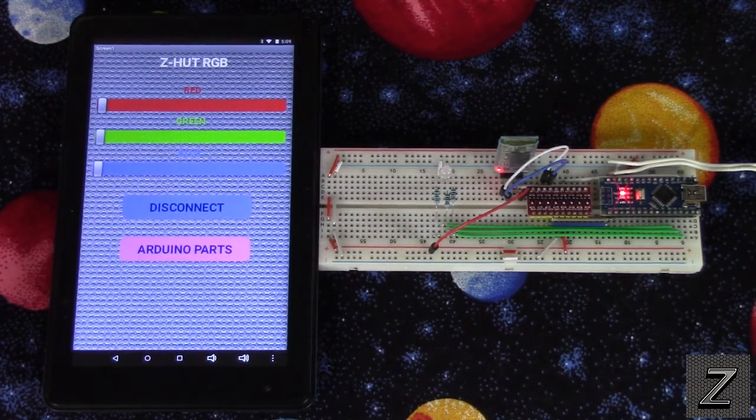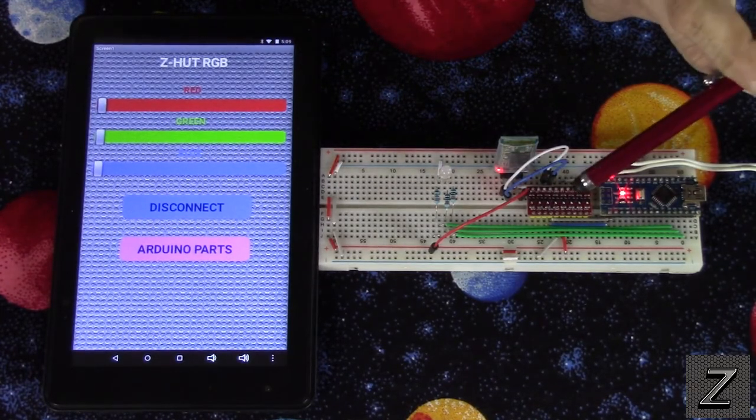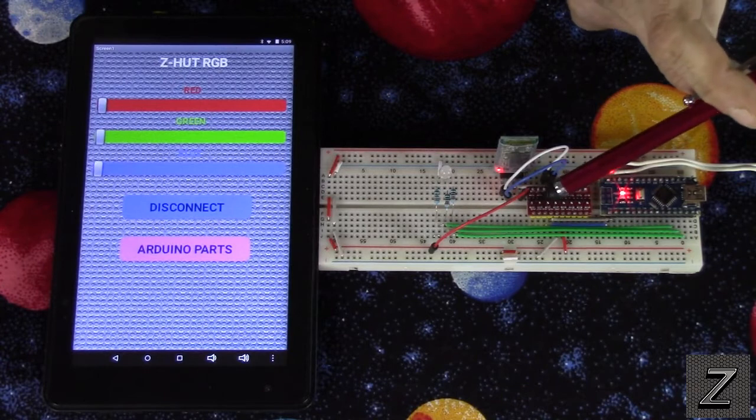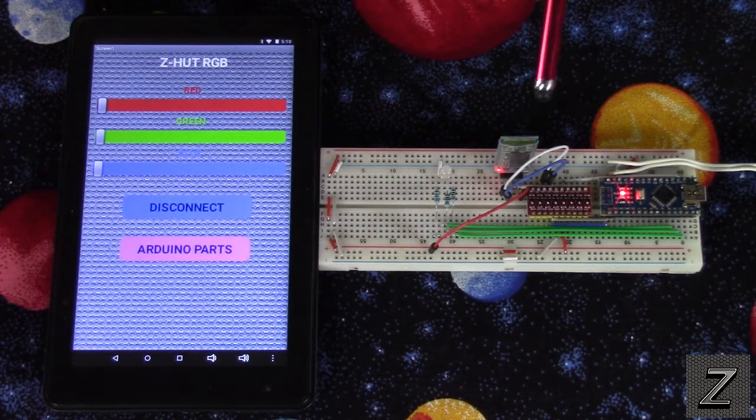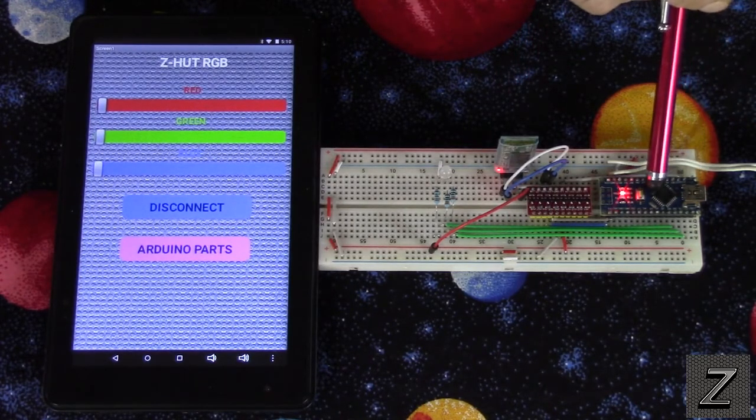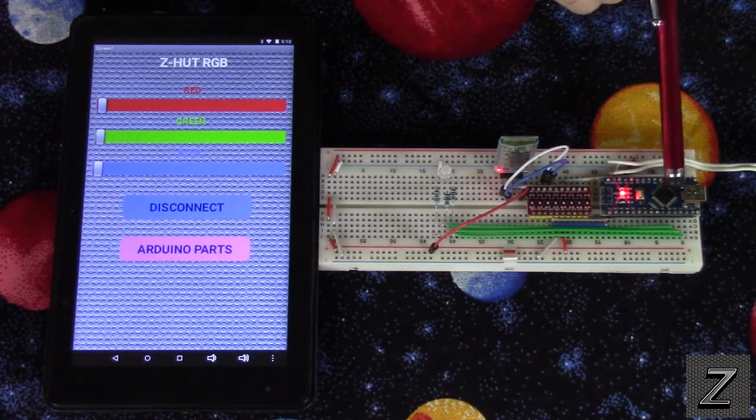Now for the logic level converter, that is this little item right here. And then we got the Bluetooth module here, I'm using the HC-06. And then of course we got the Arduino board and I'm using the Nano. This will work with any Arduino board.